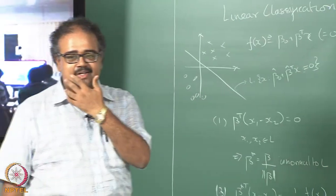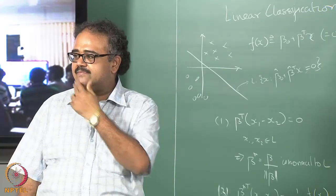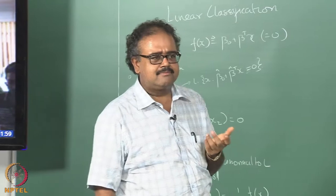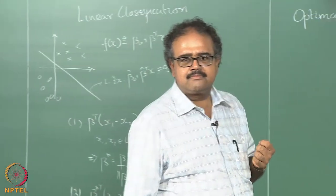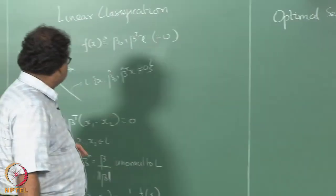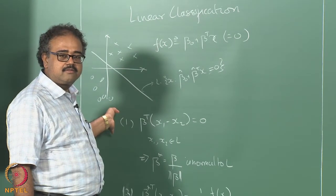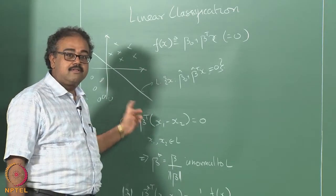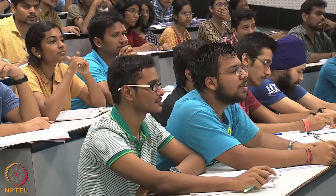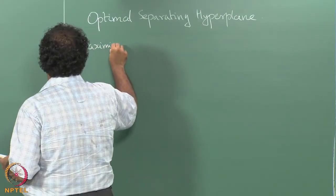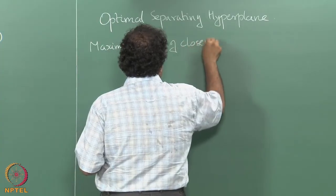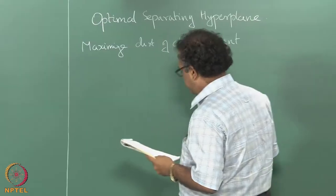Give me some options for what could be optimal. The modular sum of distances is maximum between the points and the separating hyperplane — the sum of the distances of all the data points to the separating hyperplane. That makes a lot of sense, and that is exactly what we are going to use. We are going to maximize the distance of the closest point to the hyperplane.